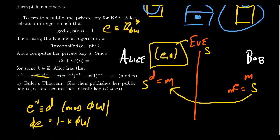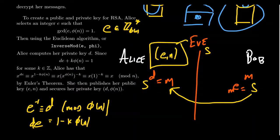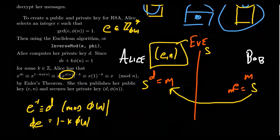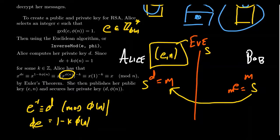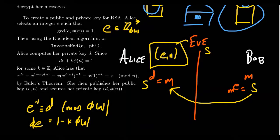So d·e ≡ 1 − k·φ(n). If you take any message x and raise it to the d·e power, by exponent rules you get x^1 · (x^{φ(n)})^{−k}. By Euler's theorem, x^{φ(n)} ≡ 1 mod n, and 1 to any power is 1. So the whole thing simplifies to x — that's why decryption undoes encryption.